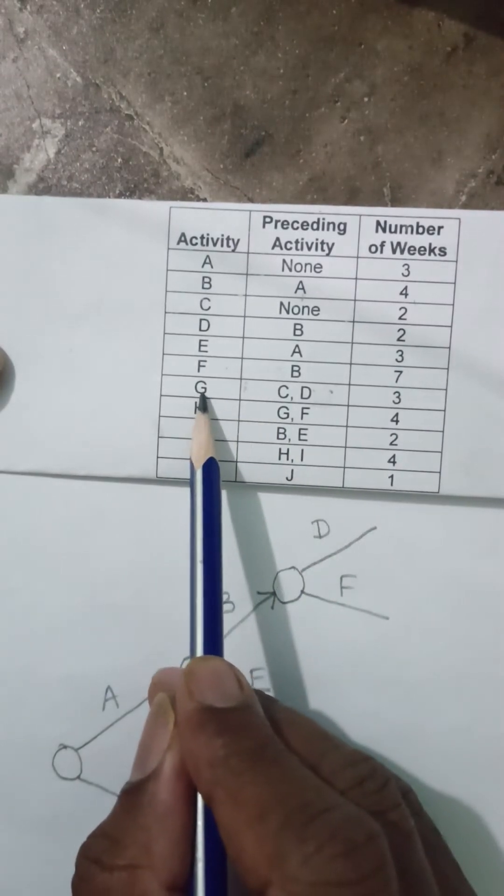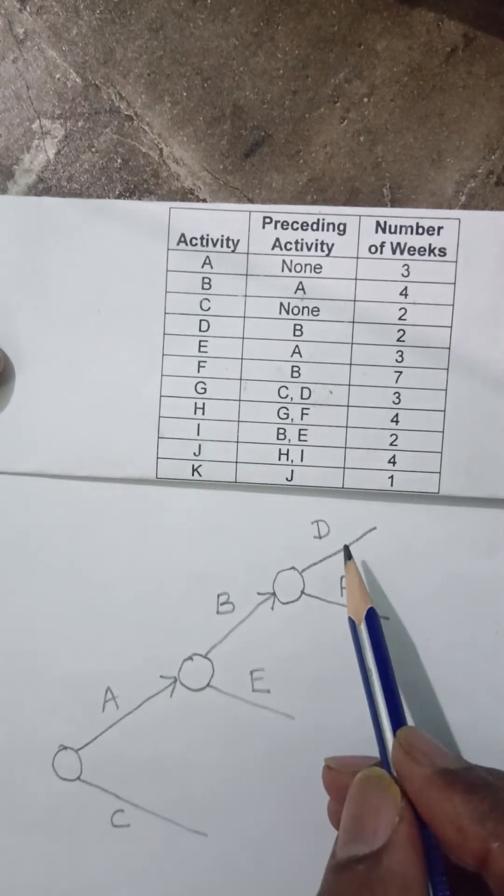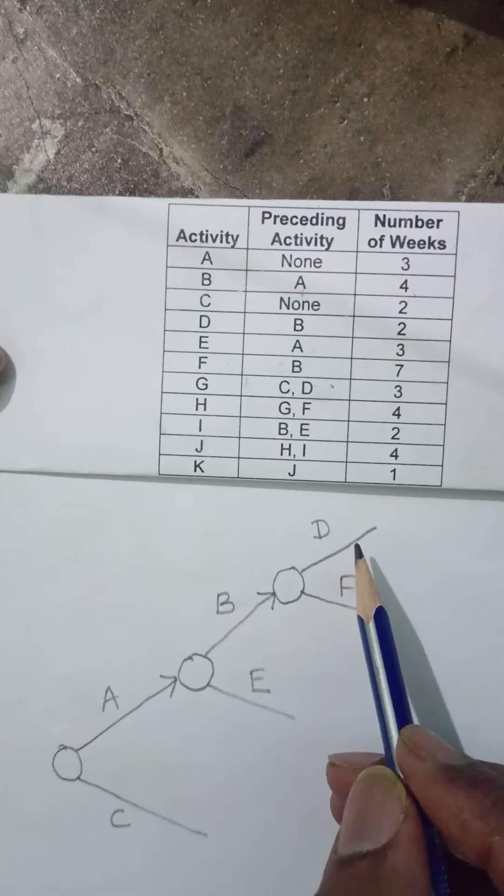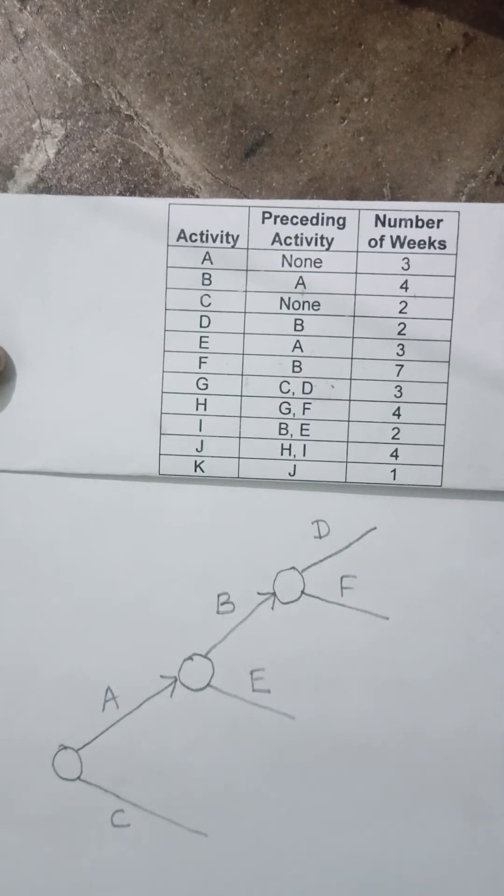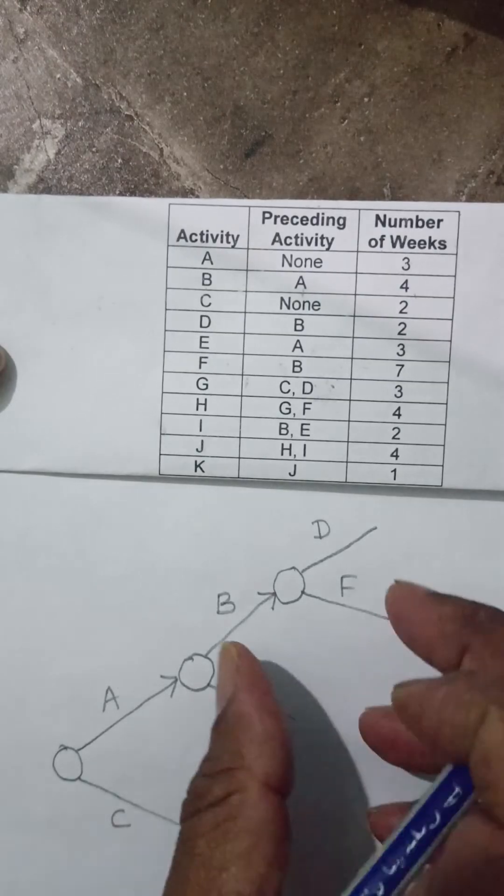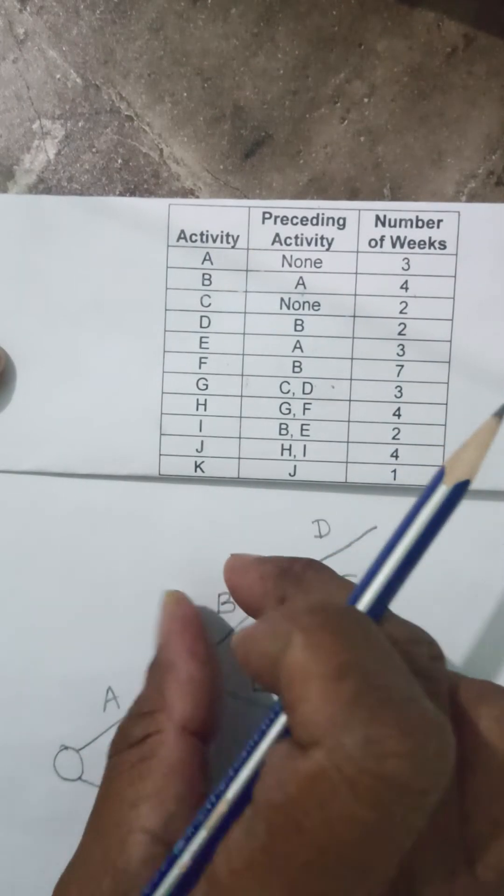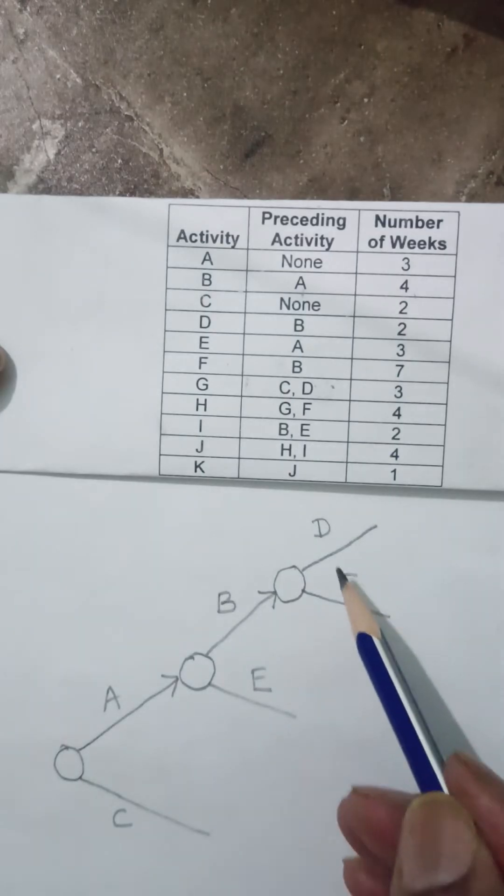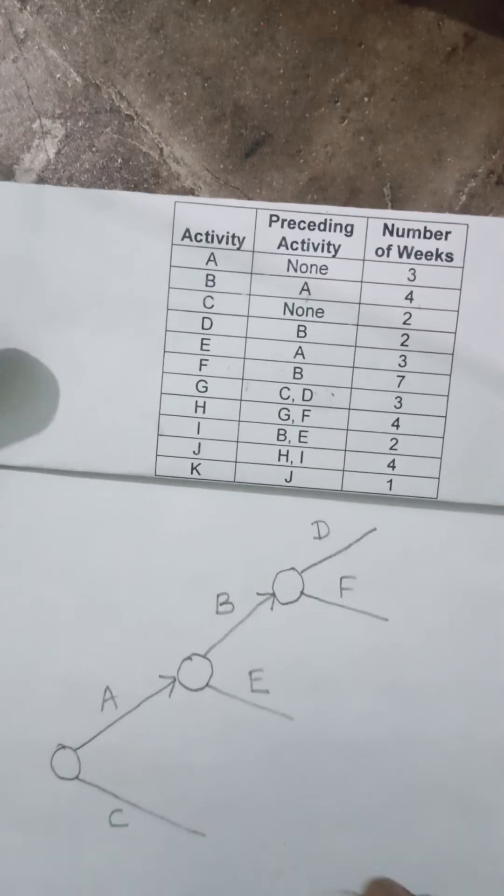Then G activity requires C and D. My C is here and my D is here. Now it is very difficult to bring them together. So what I should have done, I should have brought B down and E up, which will make D down and F up.